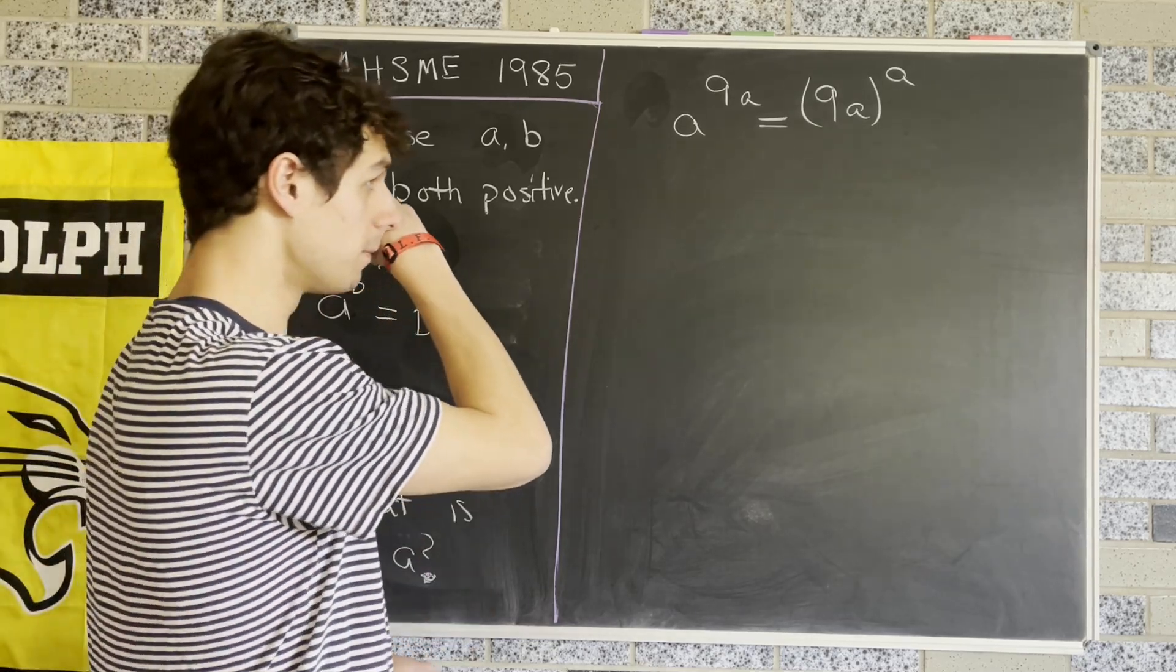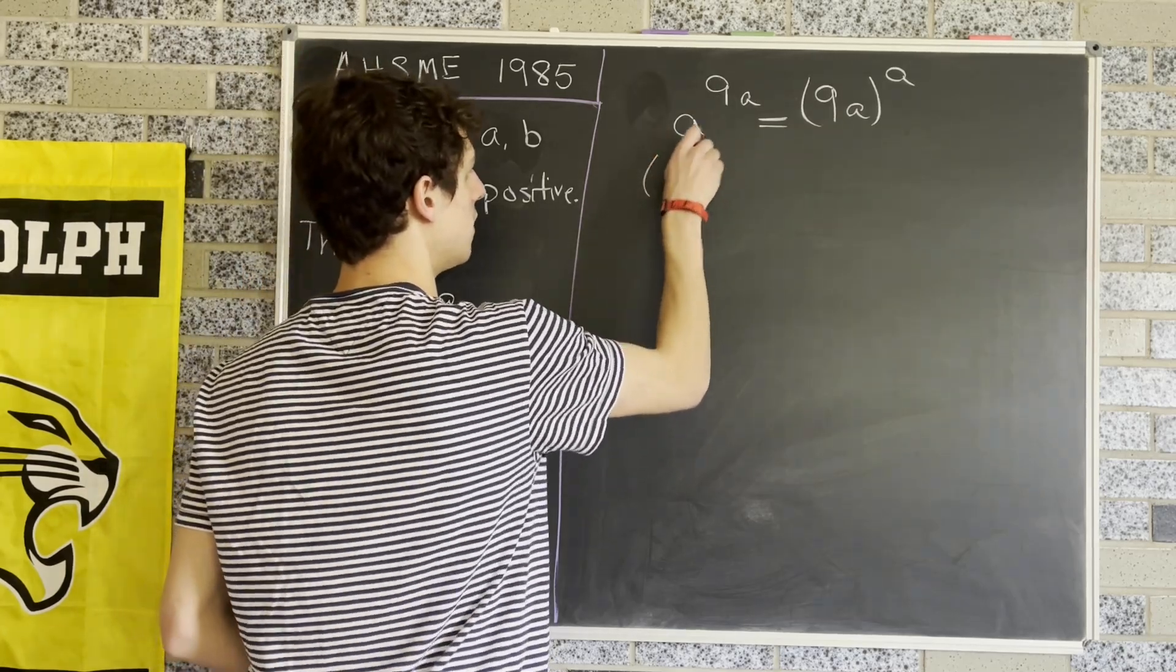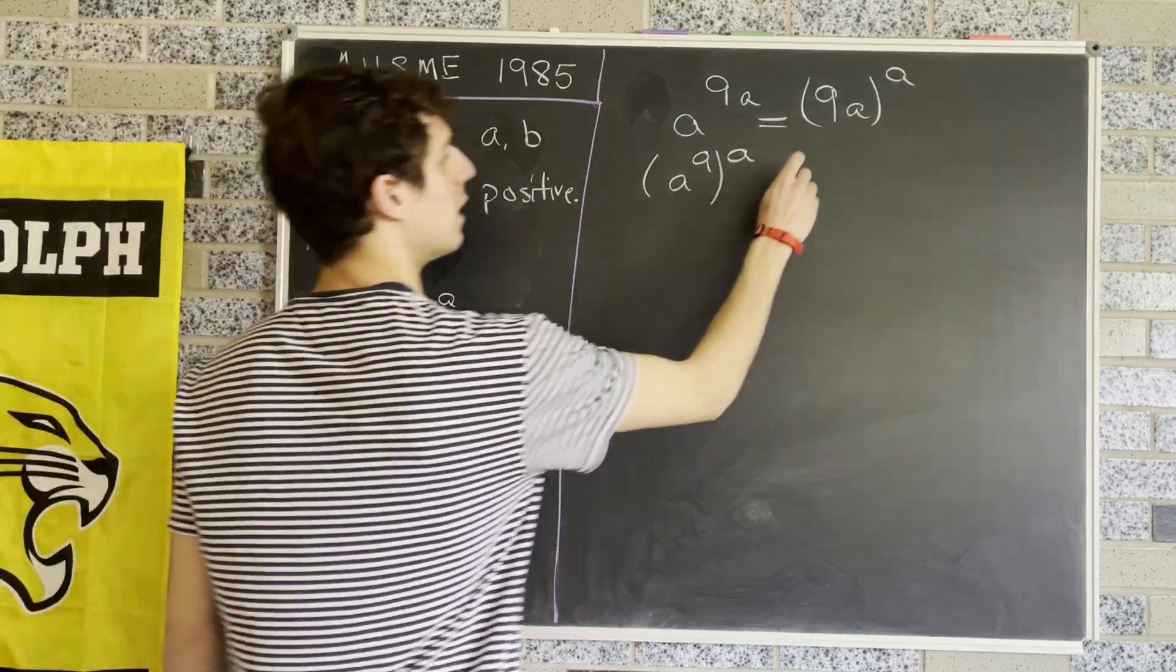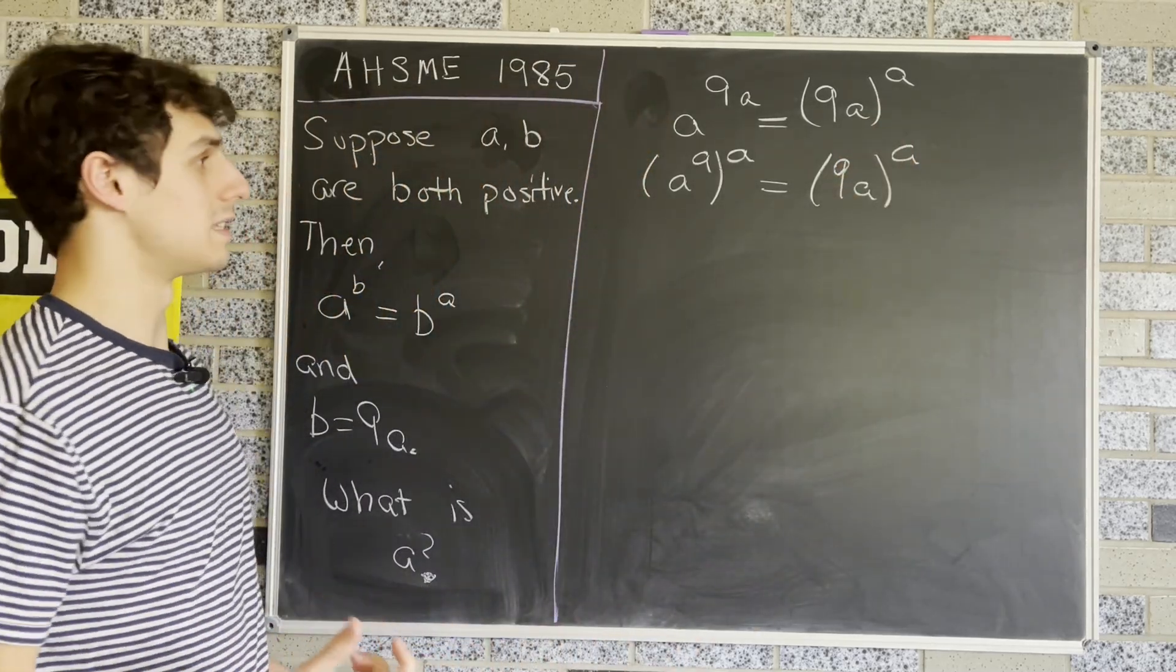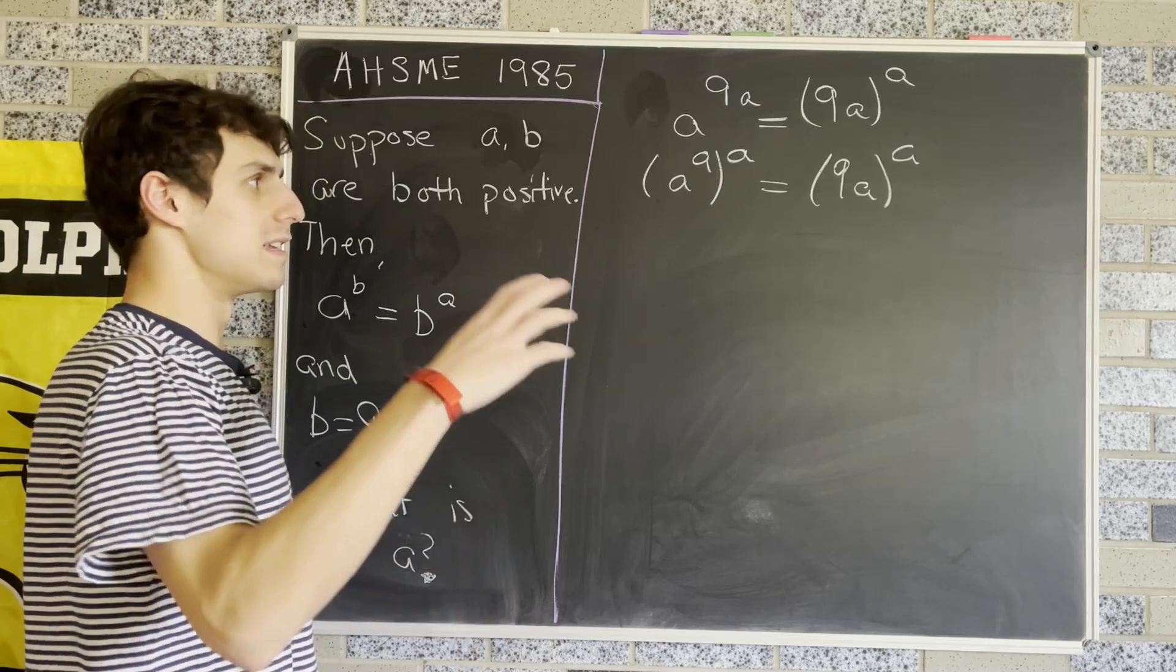Now we're going to regroup this using exponent rules so that we have (A^9)^A, which equals (9A)^A. Notice that we now have two things, one on each side, raised to the A power.